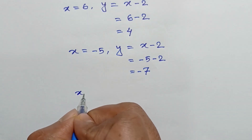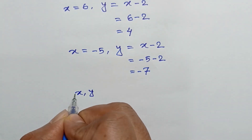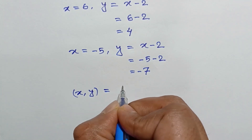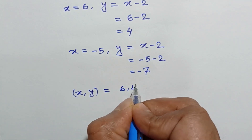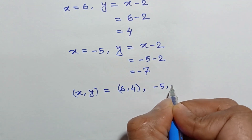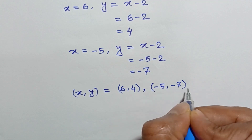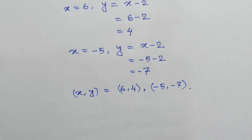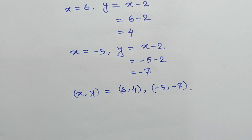So the values of x and y are: x equals 6 and y equals 4, and x equals negative 5 and y equals negative 7. If you like this video, please subscribe to my channel. Thanks for watching.